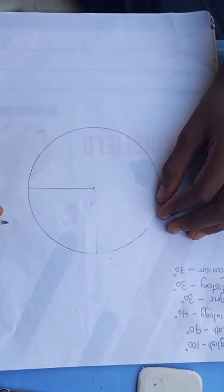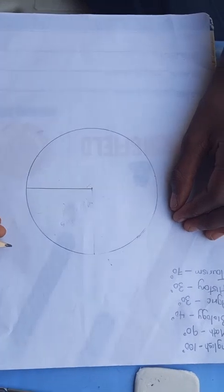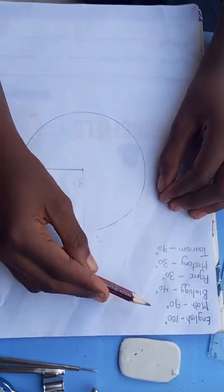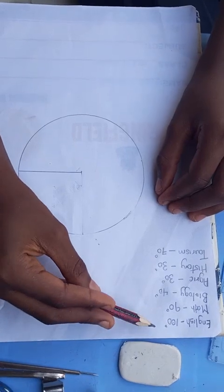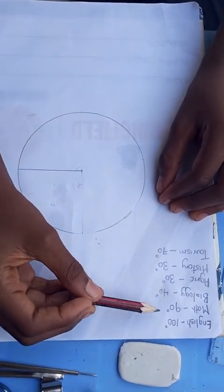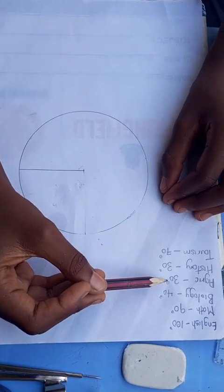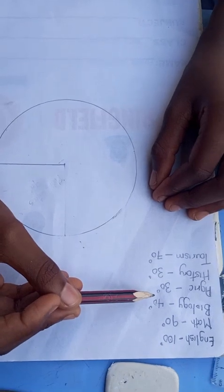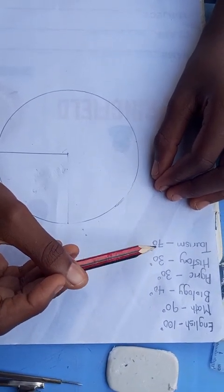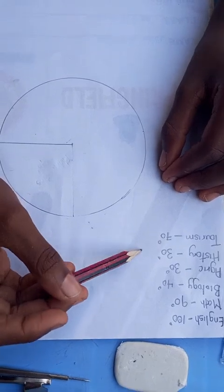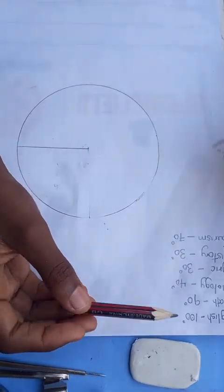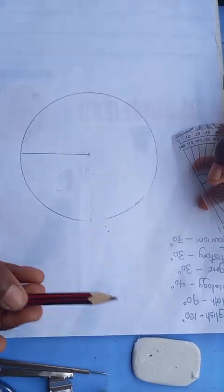Thereafter, we determine each of the sectoral angle to form a pie chart. We consider English as 100 degrees, math as 90 degrees, biology as 40 degrees, agric as 30 degrees, history to be 30 degrees, and tourism which is 70 degrees. But I'll start with math, which is 90 degrees.